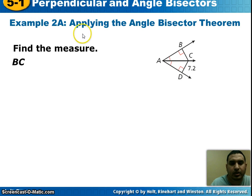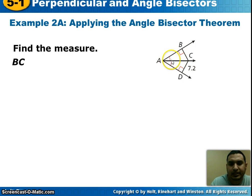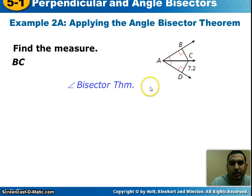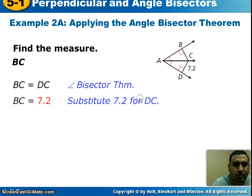Now we're going to look at some examples. Looking at this picture, we've got angle BAD and it looks like ray AC is bisecting that angle. To find the measure of BC, we look at our angle bisector theorem, which says BC would have to equal DC. So if DC is 7.2, then BC has to be 7.2.